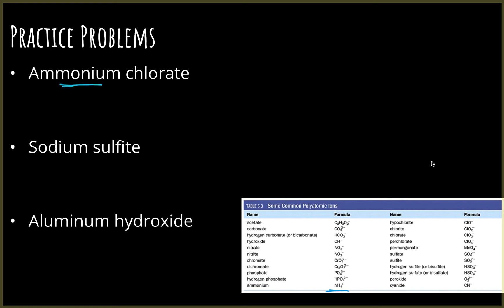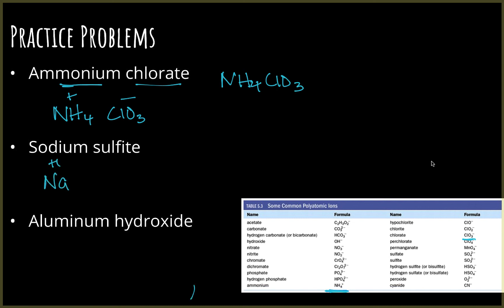For the practice problems: ammonium chlorate — ammonium is our positive polyatomic ion NH4 plus, chlorate is ClO3 minus. Crisscross plus one and minus one, and this ends up being NH4ClO3. Sodium sulfite: sodium is plus one, sulfite is SO3 minus two. Crisscross, giving Na2SO3.